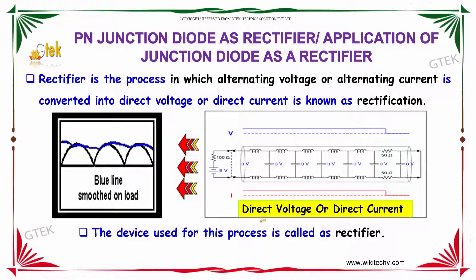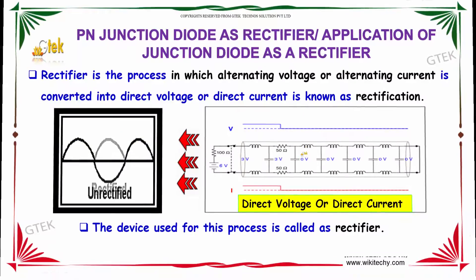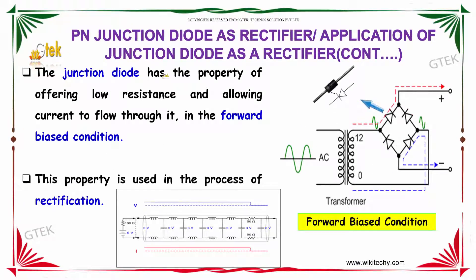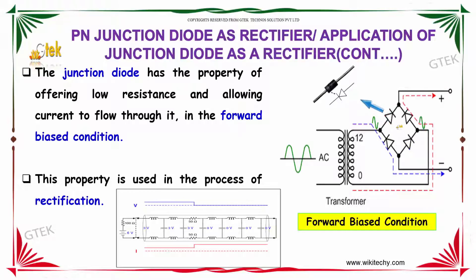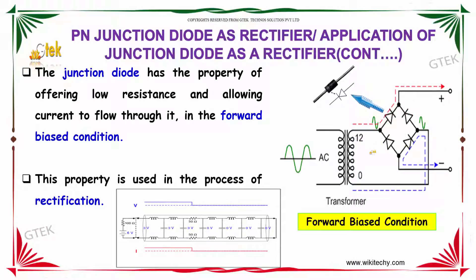The device used for this purpose is referred to as a rectifier. The junction diode has the property of offering low resistance and allowing current to flow through it in the forward biased direction. This property is used in the process of rectification.